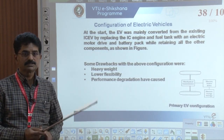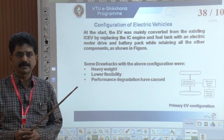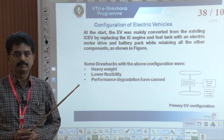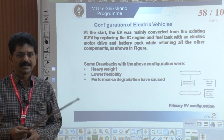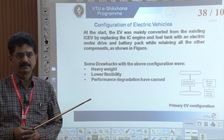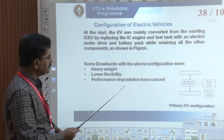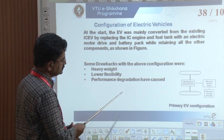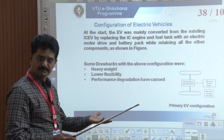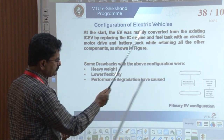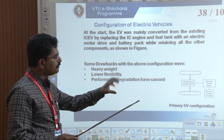Regarding the configuration of electric vehicles: initially, EVs were mainly converted from existing combustion vehicles by replacing the IC engine and fuel tank with an electric motor drive and battery pack while retaining all other components. However, drawbacks such as heavy weight, low flexibility, and performance degradation occurred. In the basic model, there is a mechanical transmission driven by an electric motor that receives energy from an electrical storage device such as a battery.